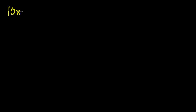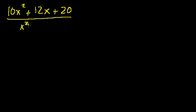Let's see if we can tackle a more complicated partial fraction decomposition problem. I have 10x squared plus 12x plus 20, all of that over x to the third minus 8. The first thing to do with any of these rational expressions that you want to decompose is to make sure that the numerator is of a lower degree than the denominator. If it's not, you do algebraic long division. But here the highest degree term in the numerator is second degree, and the denominator is third degree, so we're fine.